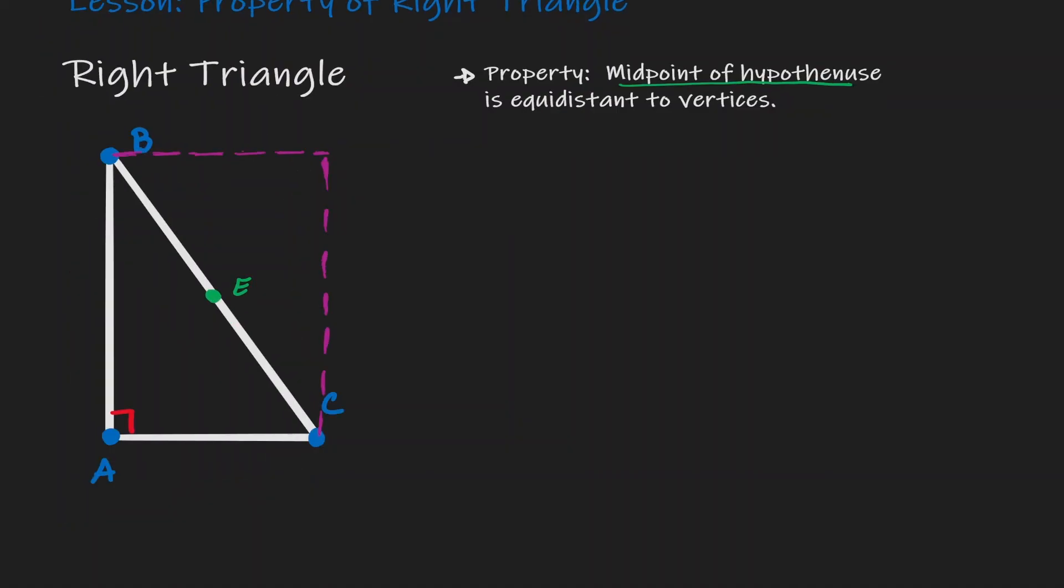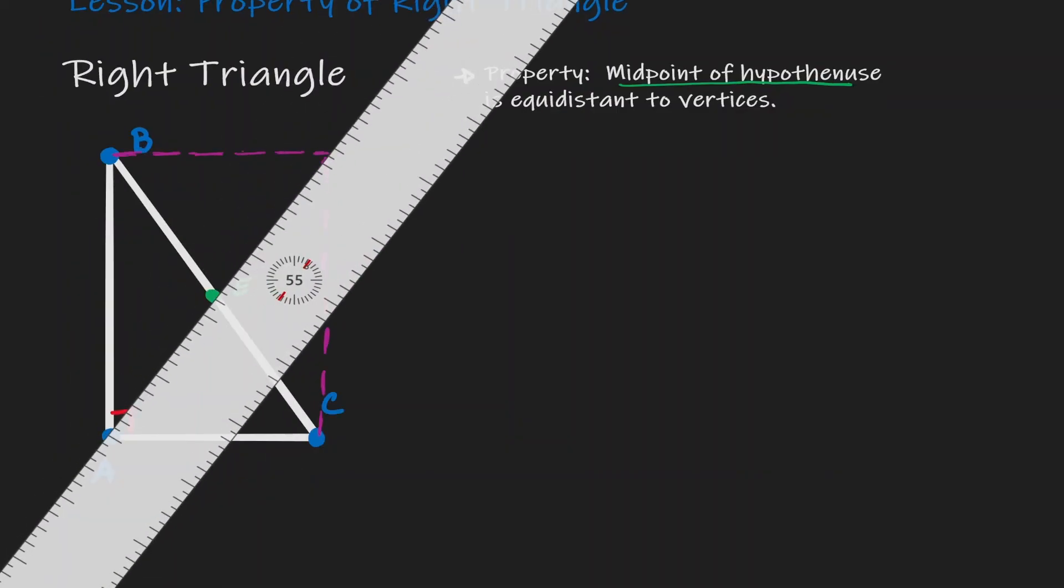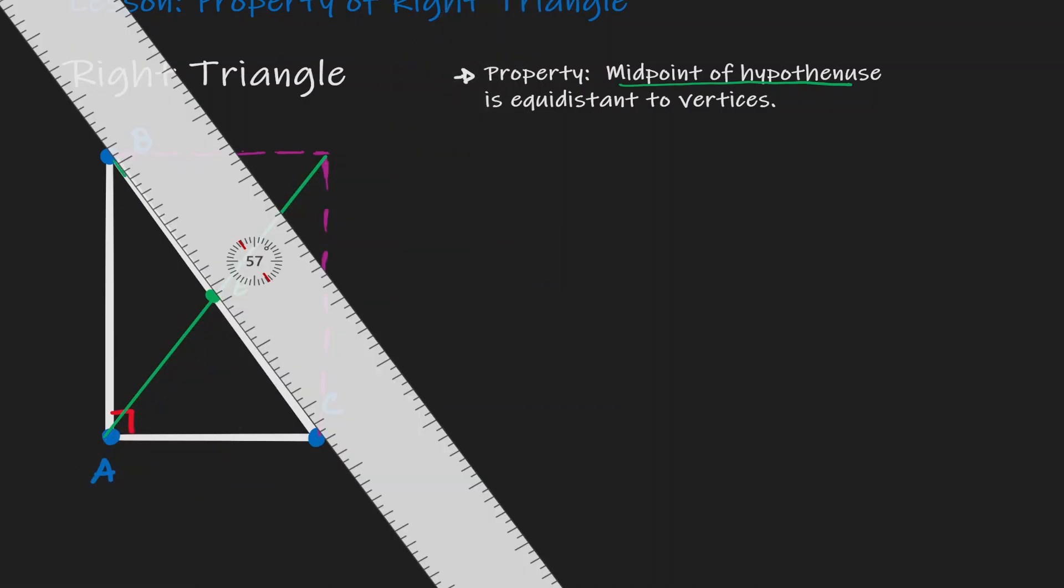So let's consider the diagonals in a rectangle. Let's consider our first diagonal here and let's consider our second diagonal right here.